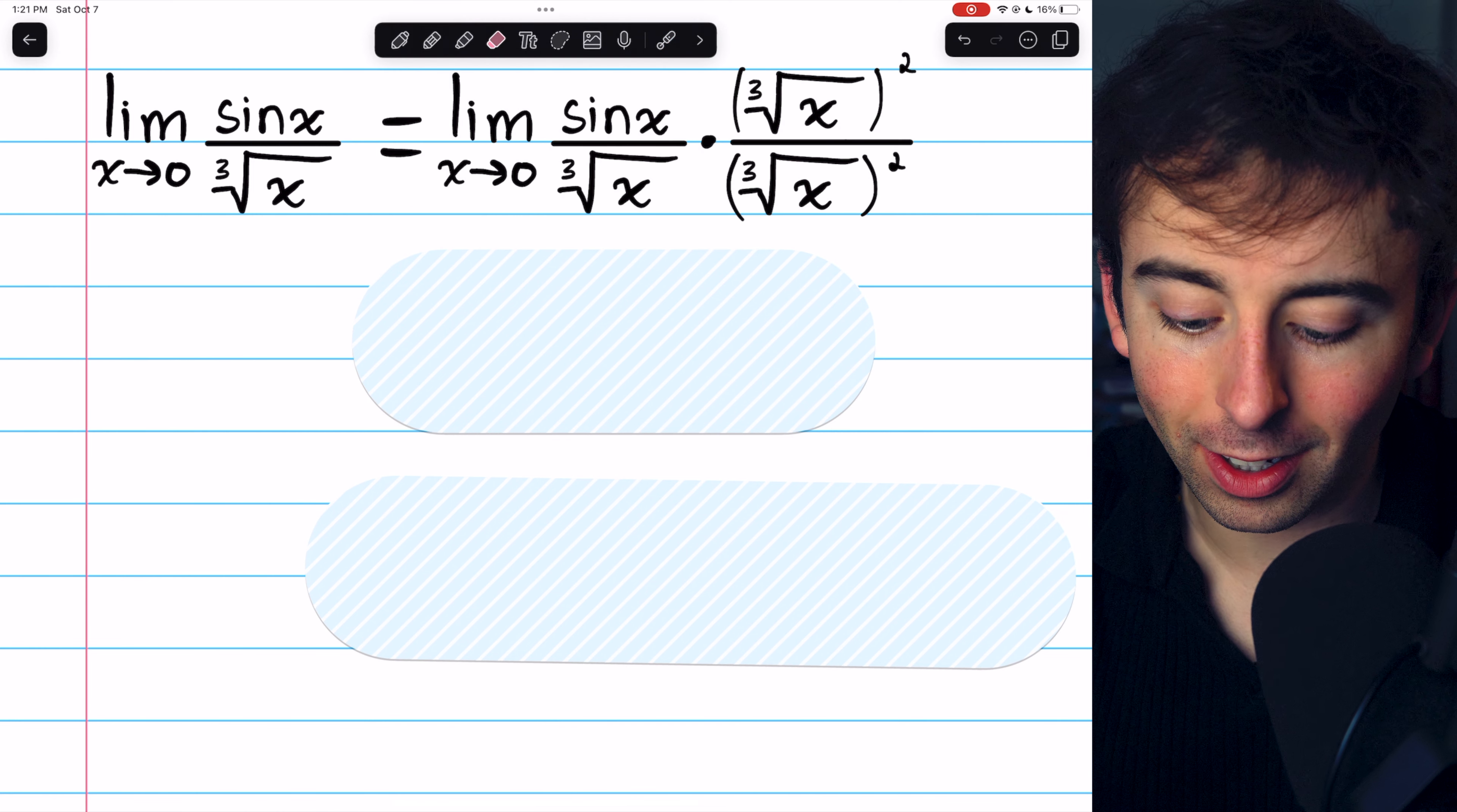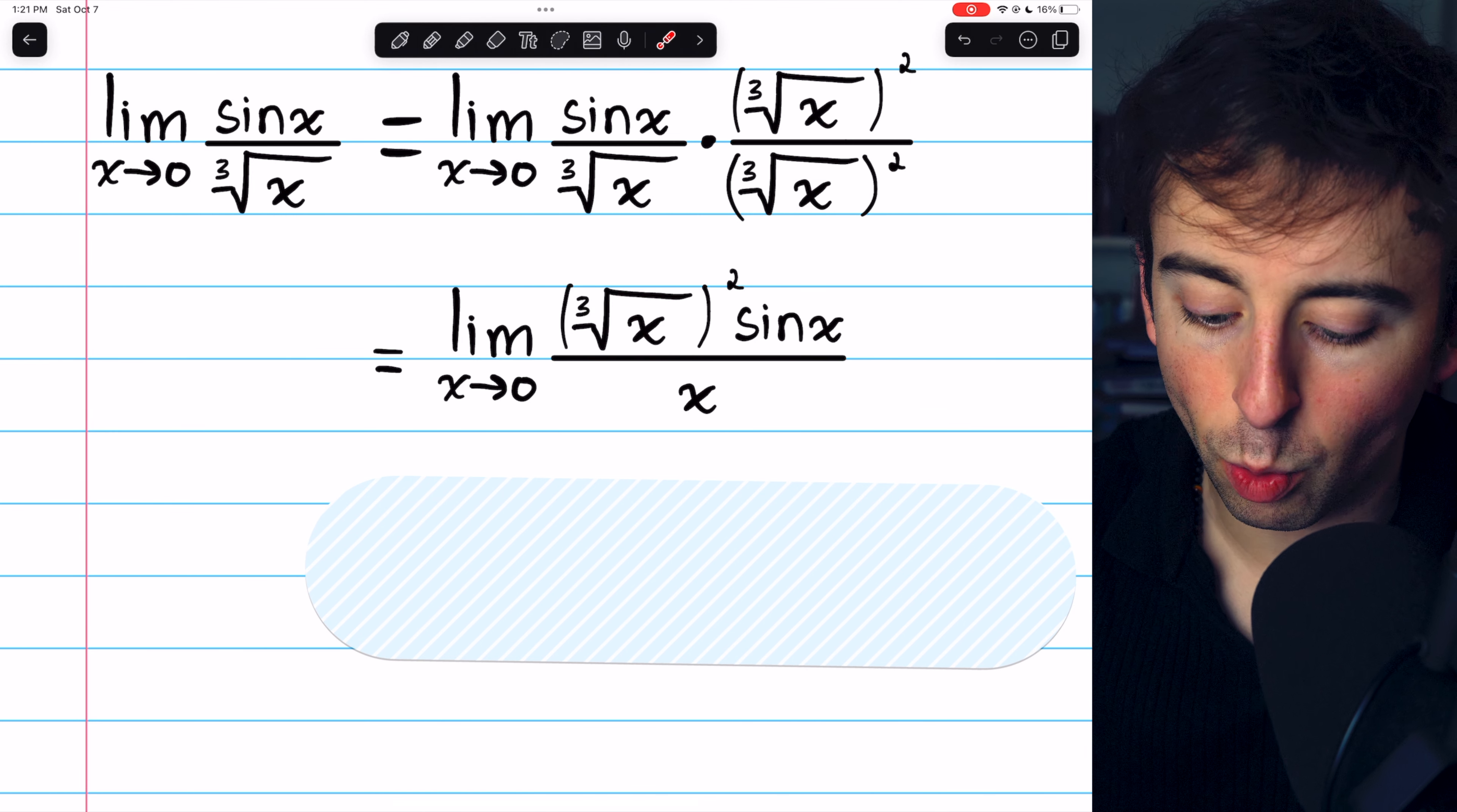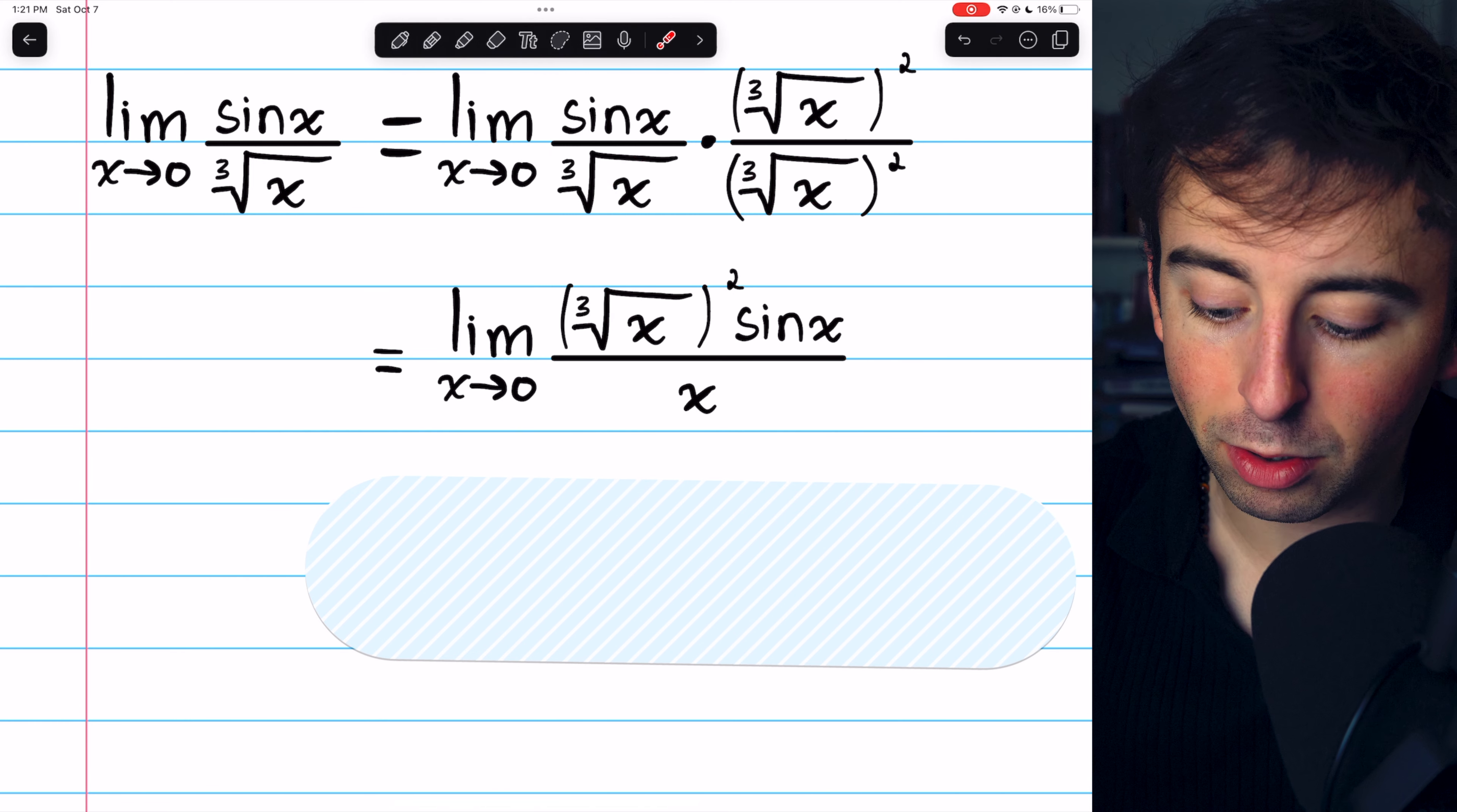So that's going to look like this. We multiply by the cube root of x squared over the cube root of x squared. When we do that, we of course have a cube root of x squared in the numerator, but in the denominator, we have the cube root of x times two more factors of the cube root of x. That's the cube root of x cubed, which is just x.